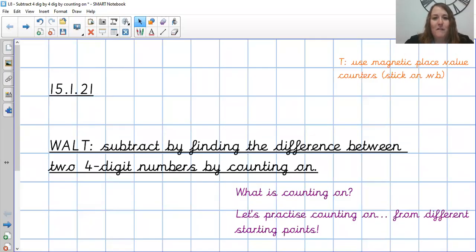Hello Year 4 and welcome to your final maths lesson of the week. It is Friday the 15th of January and this is also our last maths lesson in the mental subtraction unit. This is lesson 8 and our last work for this unit is to subtract by finding the difference between two four-digit numbers by counting on. Probably one of the nicer maths ones to end on because we're going to be counting on to do subtraction rather than counting backwards.